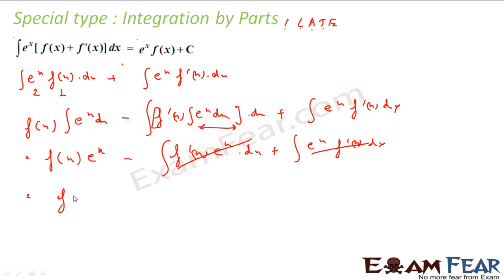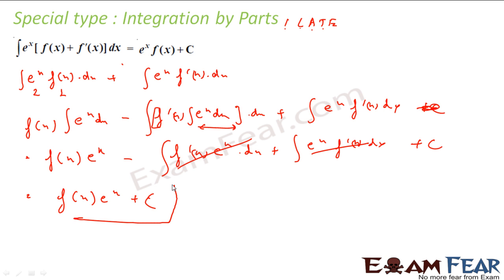So what I am left with is f(x)·e^x plus a constant, because when I integrate this the constant appears. So I have proved that this special integration — where I have e^x times [f(x) + f'(x)] — gives nothing but e^x·f(x) plus constant.